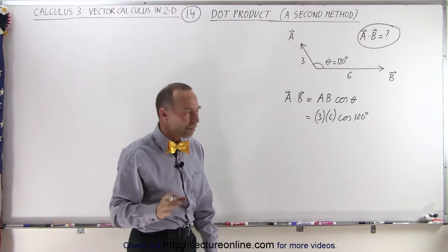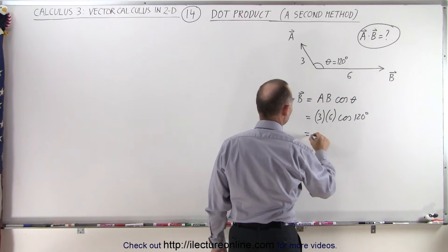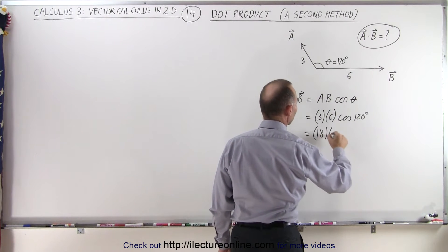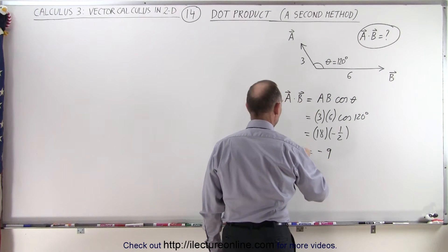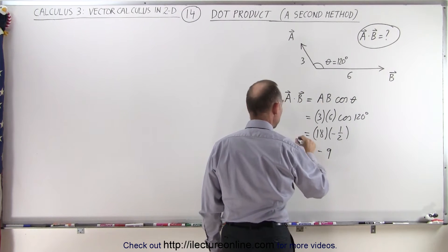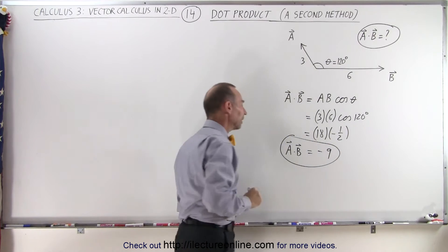The cosine of 120 is minus 0.5, so this becomes 18 multiplied by minus 1/2, and so this becomes minus 9. So here we can see that A dot B is indeed equal to negative 9.